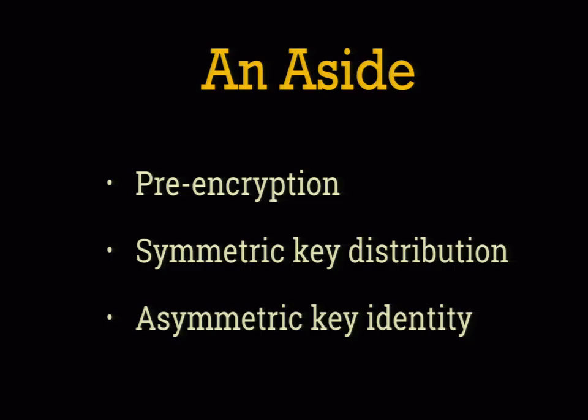There's a difference between a trusted third party system and a pre-encryption system. The former relies on code to control access; the latter relies on math. Stuff from rigorously proved mathematical theorems is somewhat stronger than one person's one-off ACL code. Most ACL systems in dedicated secrets management tools are more hardened than just code someone wrote five years ago with no attention paid, but it's still the difference between math and code — and math is generally going to be stronger.